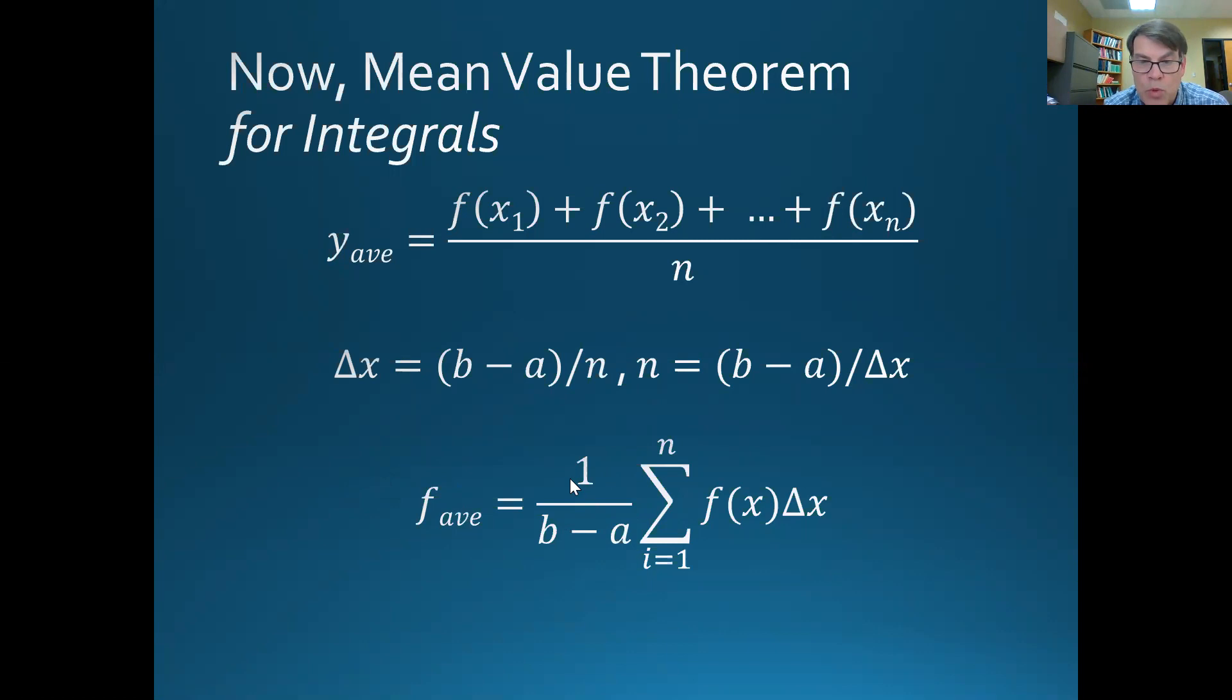But where did this 1 over b minus a come from? Well, basically, I've divided all of these f of x's by n, and n equals this. So if I'm dividing by this, it flips. The delta x goes in the top, and the b minus a goes in the bottom, because I've divided all of those things I've added up. I've divided them by n, and so that's why it's 1 over b minus a.